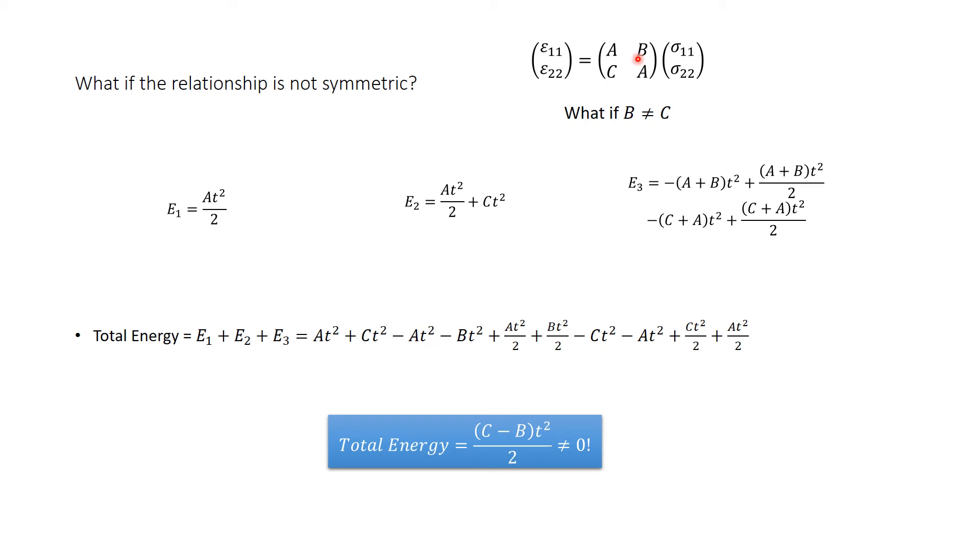This example shows the importance of having the two terms b and c equal. This relationship has to be symmetric. If they are not equal, the material model would predict physically impossible behavior where energy could be created or could be dissipated during a loading cycle of a deformation of an elastic material. Remember, an elastic material by definition preserves the energy.